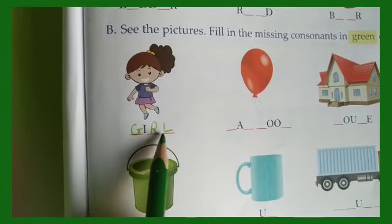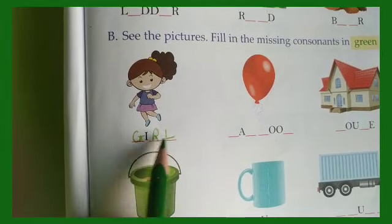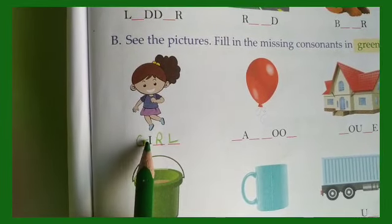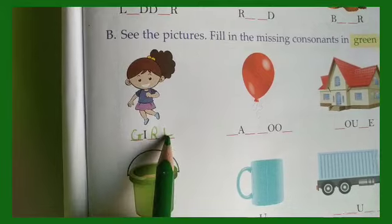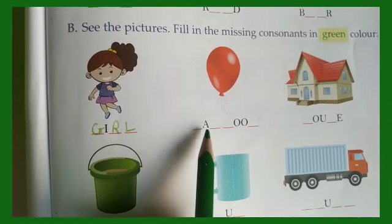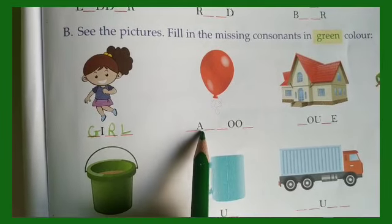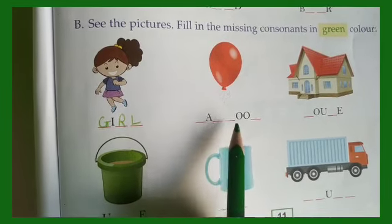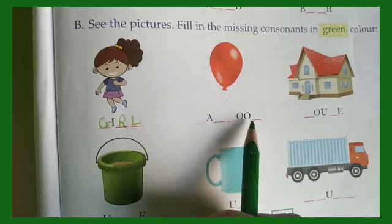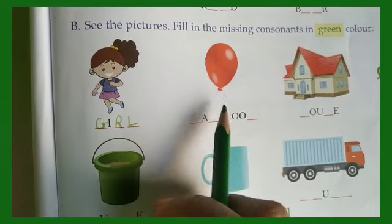Girl — G, I, R, L. I is a vowel and these are all consonants. A is also a vowel, and O is also a vowel.